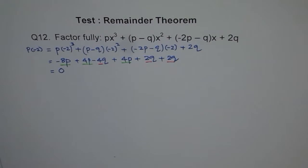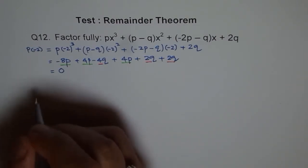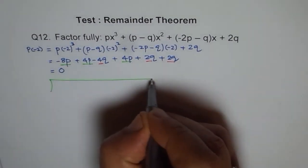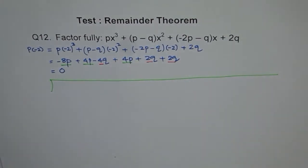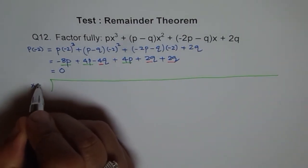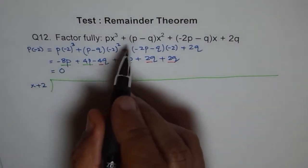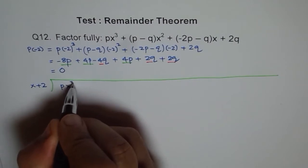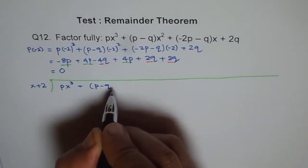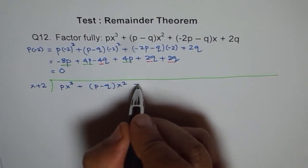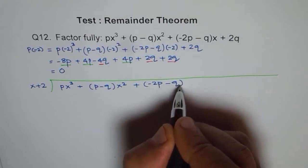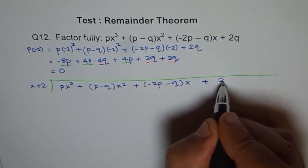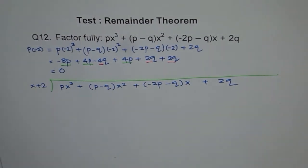If x plus 2 is a factor, then I can divide the whole term with x plus 2 and factorize it. Let's write x plus 2 here, and what we have here is px³ + (p-q)x² + (-2p-q)x + 2q. We'll try to divide this now and see what is our quotient. Remainder should be 0.